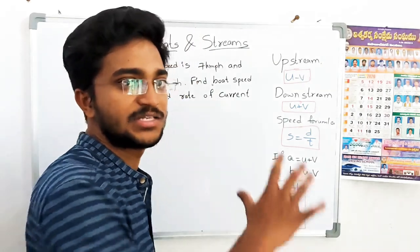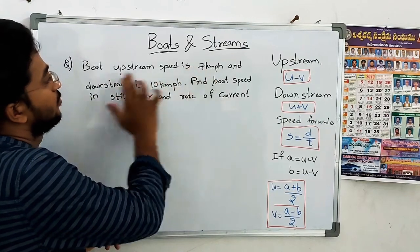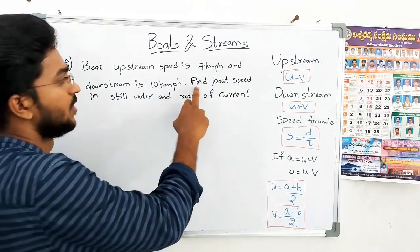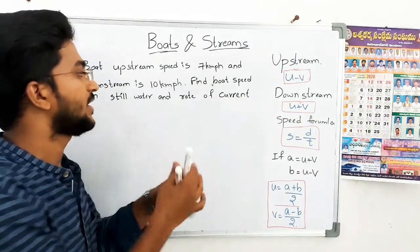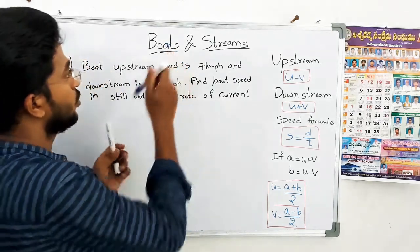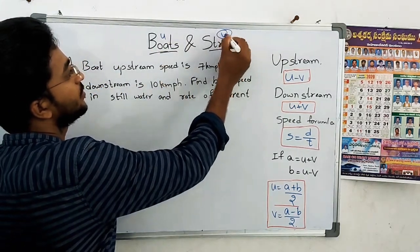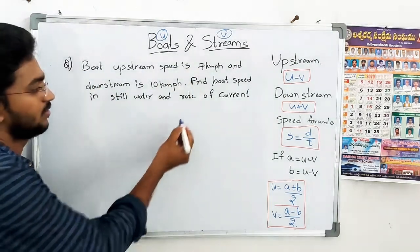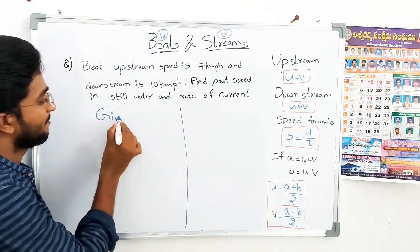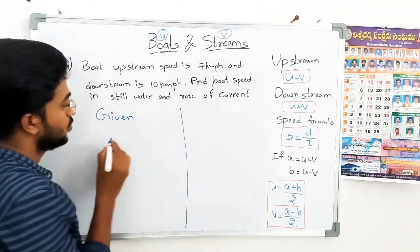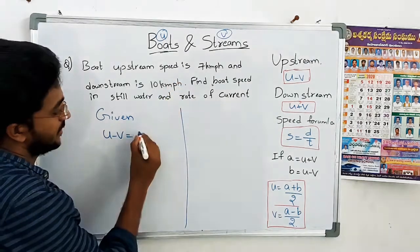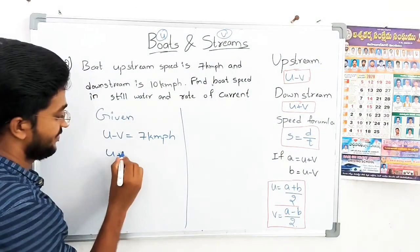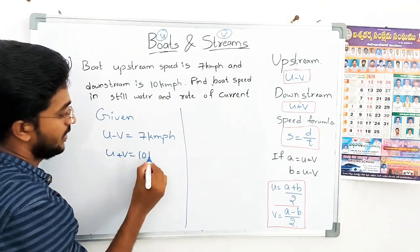Simple basic question: A boat's upstream speed is 7 km per hour and downstream speed is 10 km per hour. Find the boat's speed in still water and the rate of current. Rate of current means stream speed. So upstream speed U minus V equals 7 kmph, and downstream speed U plus V equals 10 kmph.